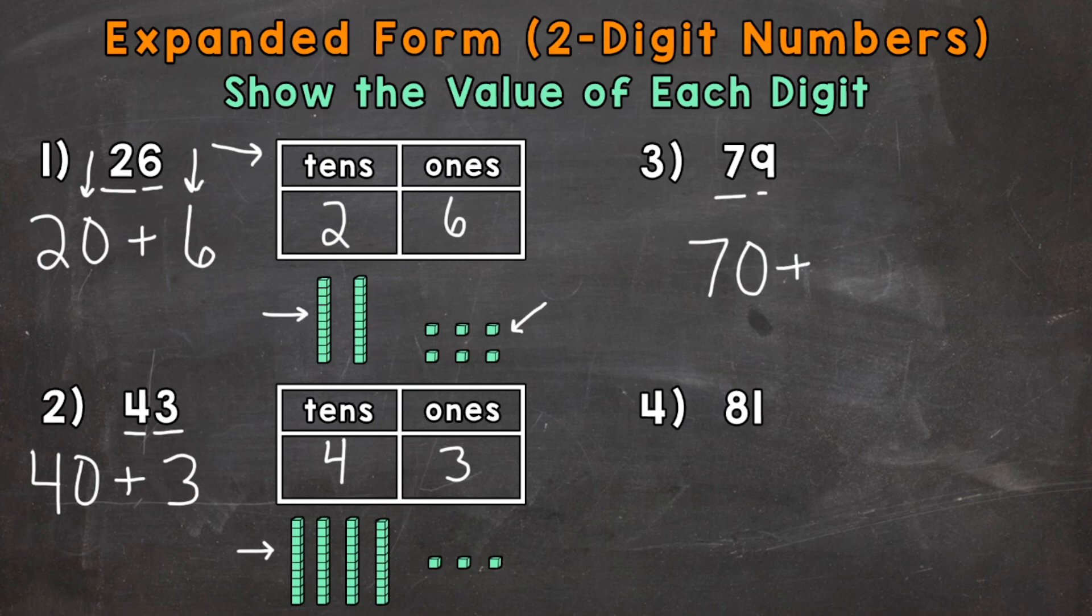Plus, we have a 9 in the ones place. That 9 has a value of 9. It represents 9 ones. So 70 plus 9.